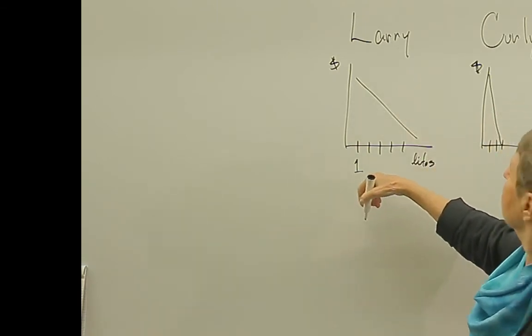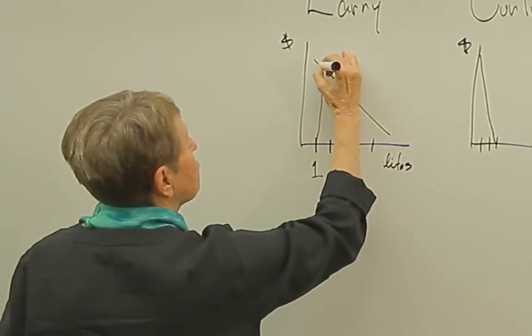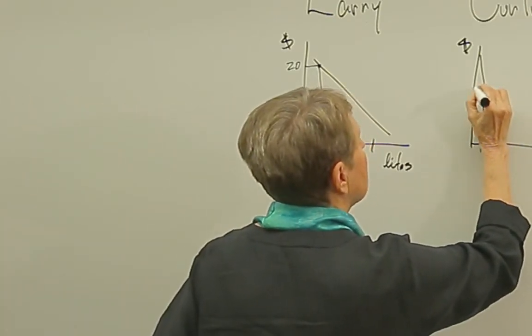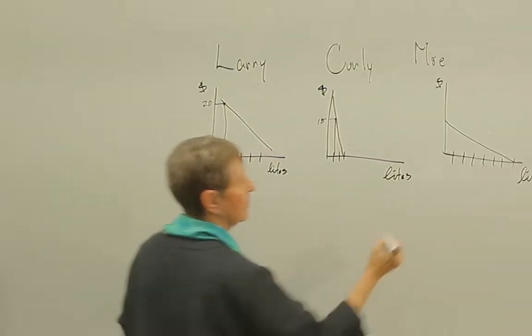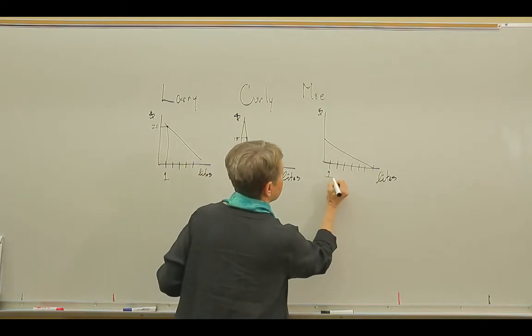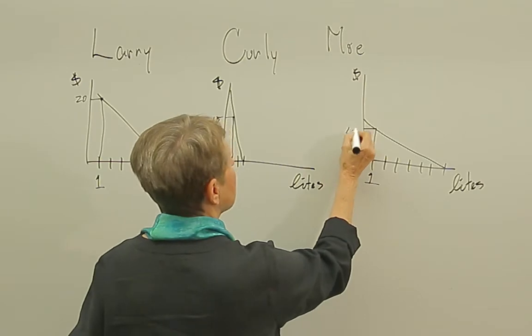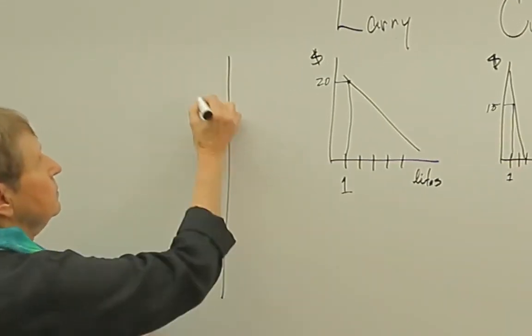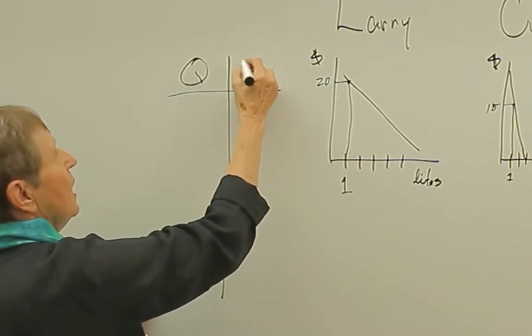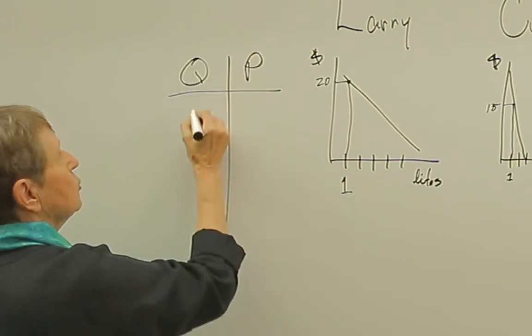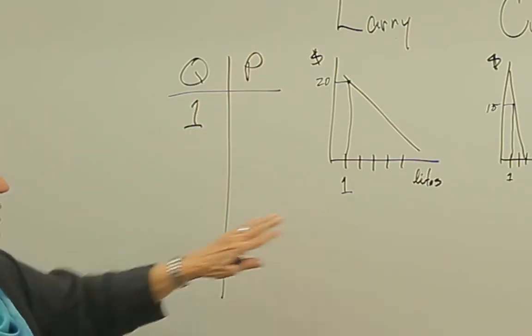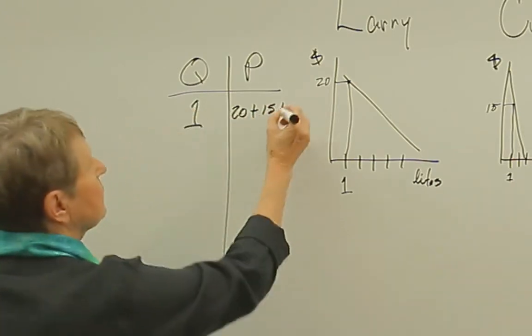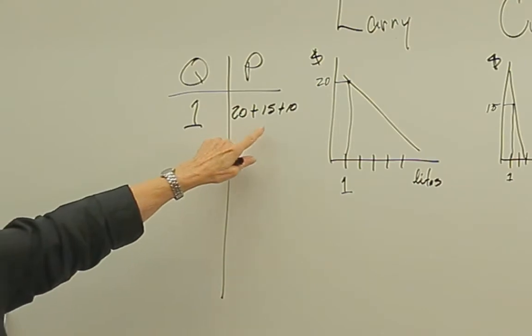What we are going to do now with public goods is we have to sum them up vertically. And so we say, okay, street light number one for Larry. Larry says street light number one is worth $20 to him. Curly says street light number one is worth $15 to him. And so if we're going to construct a market demand for this information, here's the quantity and here's the price or the market value. So one street light. So one street light to this society is worth $20 plus $15 plus $10. So street light number one is worth $45.